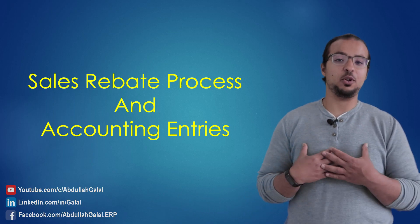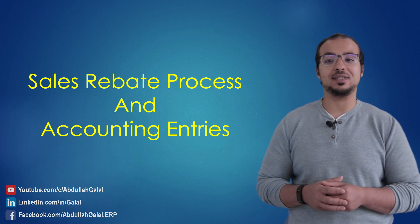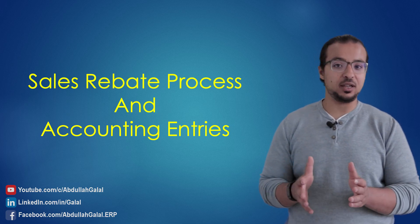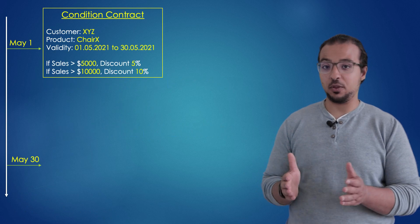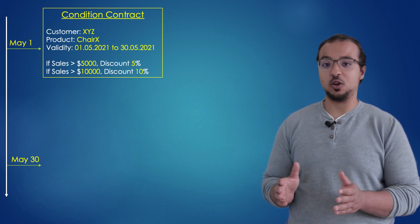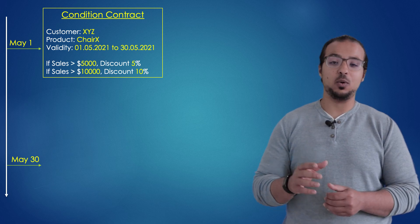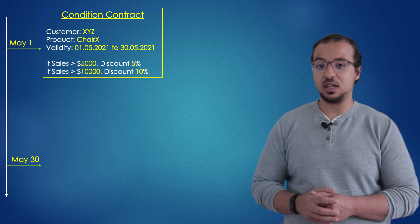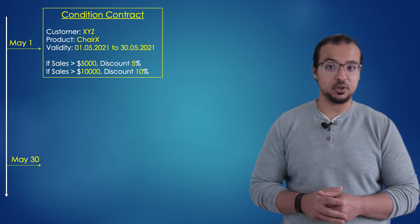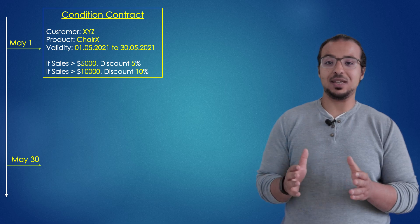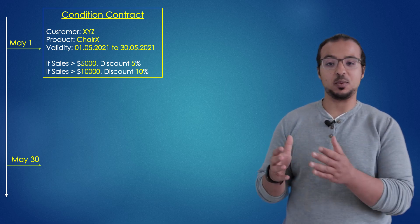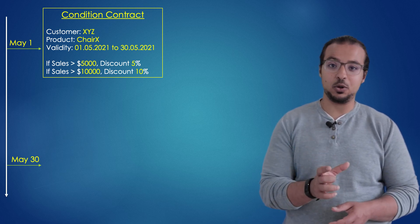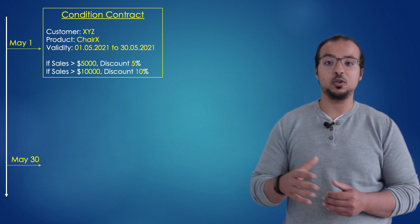Let's take a quick example. I am the owner of a company and I would like to increase the sales of one of my products. So I reach out to one of my customers and I tell him: if you buy from me this product within the month of May for the total value of 10,000 USD, I will give you a discount of 10%. And if you buy for a total value of 5,000 USD, I will give you a discount of 5%. This is the rebate agreement — an agreement between the company and a specific customer that if he buys a certain product within a certain period, he will get a discount at the end of the period.